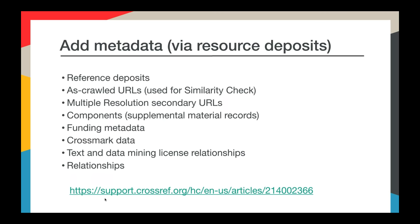You can add some types of metadata to your record after it's been registered. These include reference deposits — if you participate in our Cited By service, you'll be sending us your reference lists for journal articles, but we encourage everyone to send those along. You can add funding data components, supplemental material metadata records, crossmark data, text and data mining license information, and information about relationships between DOIs and other identifiers. This means you can create a record for a journal article that contains just bibliographic metadata, then submit the reference list, funding, and license data to be added to your existing record without resubmitting the record as a whole. This works very well if you partner with vendors to provide funding information, or if your platform doesn't support reference deposits.